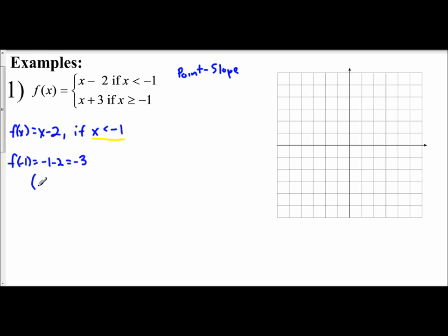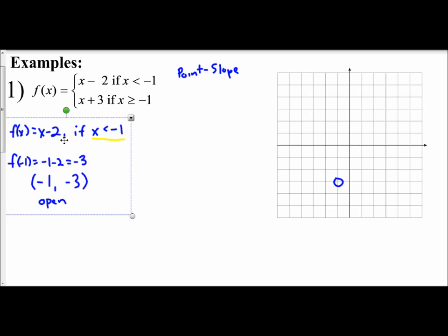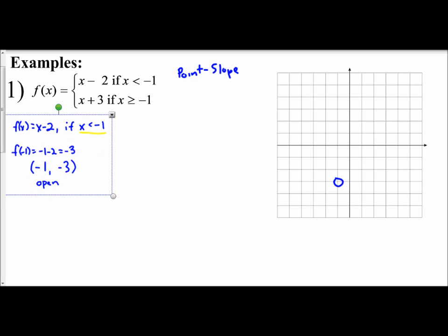So the coordinate that we start at is negative 1, negative 3. Since the boundary is less than, we are going to use an open circle at that point. So I go to negative 1, negative 3 and use an open circle. That gives us our starting point for this portion of the piecewise function where f(x) equals x minus 2 and x is less than negative 1. It's that boundary that tells us how we are to apply our slope.